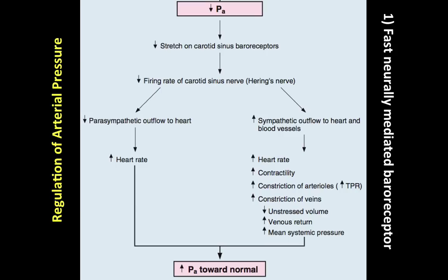The baroreceptors are stretch receptors located in the walls of the carotid sinus, near the bifurcation of the common carotid arteries, and also at the aorta. When arterial pressure is low, the body senses low stretch on the carotid sinus baroreceptors because there isn't enough pressure exerted on them. The baroreceptor then senses this low stretch, resulting in a low firing rate of the carotid sinus via Hering's nerve.